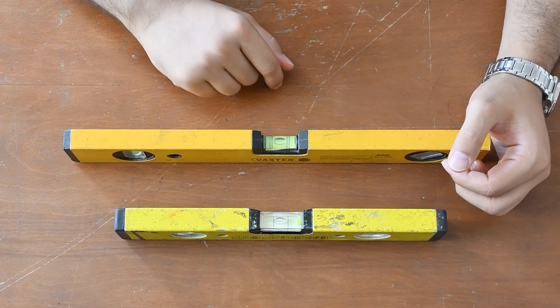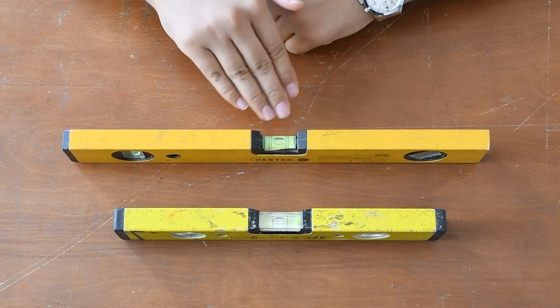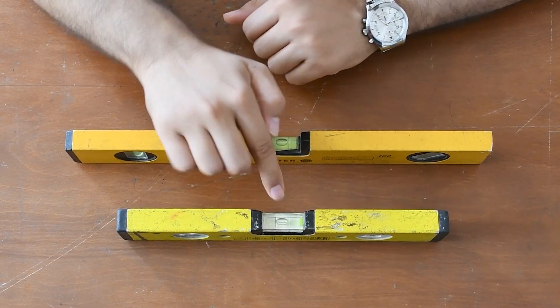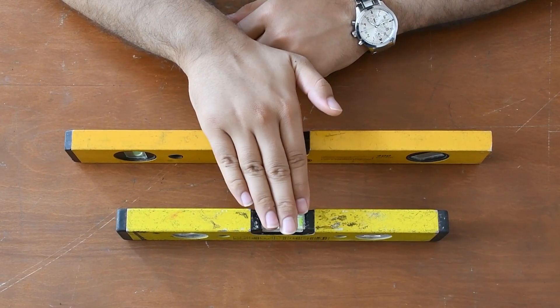As you can see, this one is showing us that the table is level and has no slope, but this one is showing that the table is tilted to my left, which is your right.